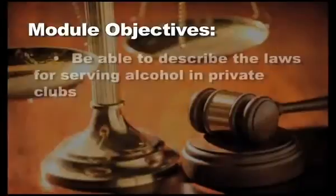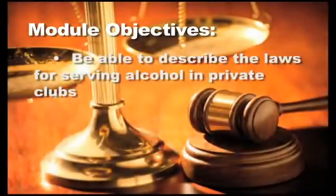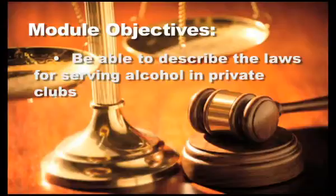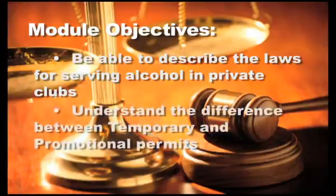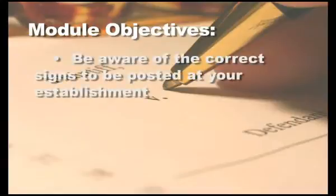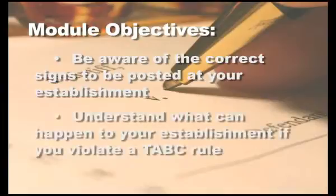Module Objectives. After completing this module, you will: 1. Be able to describe the laws for serving alcohol in private clubs. 2. Understand the difference between temporary and promotional permits. 3. Be aware of the correct signs to be posted at your establishment. 4. Understand what can happen to your establishment if you violate a TABC rule.